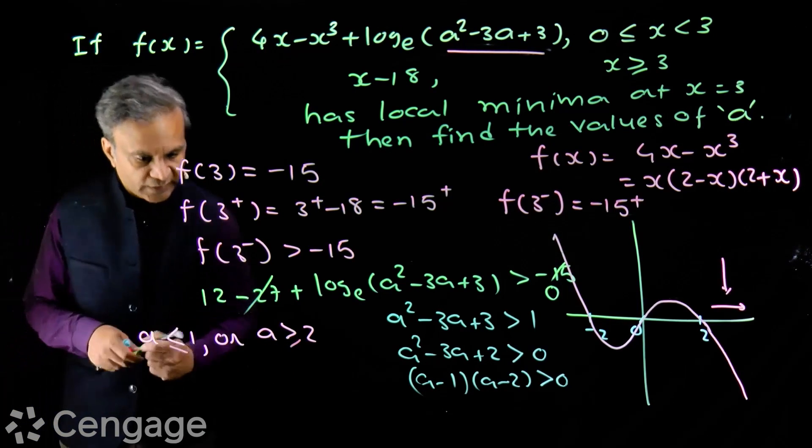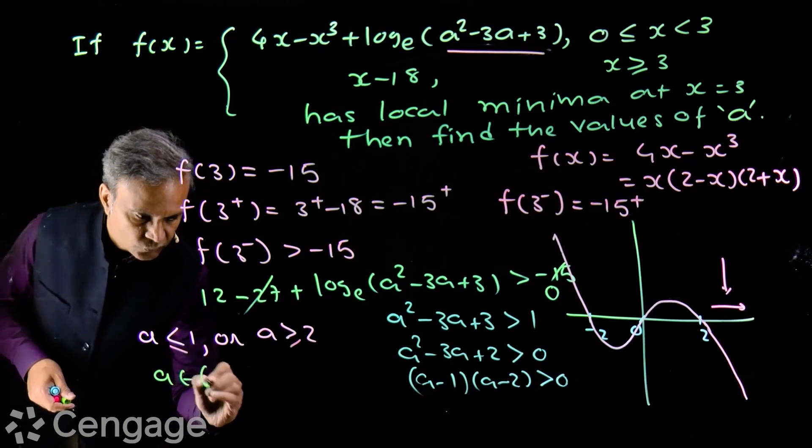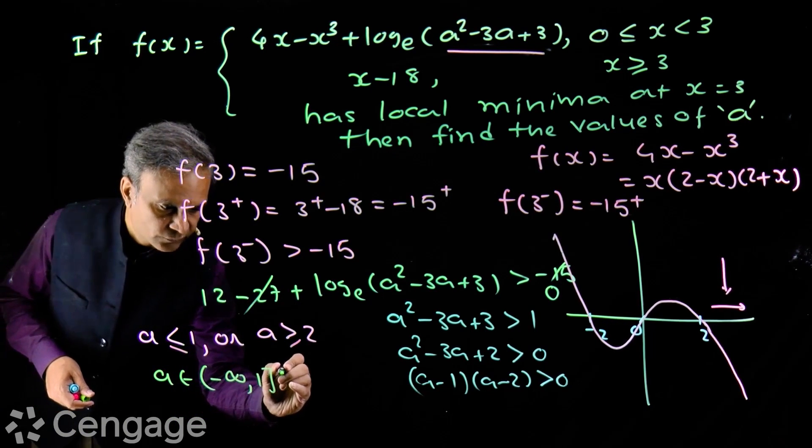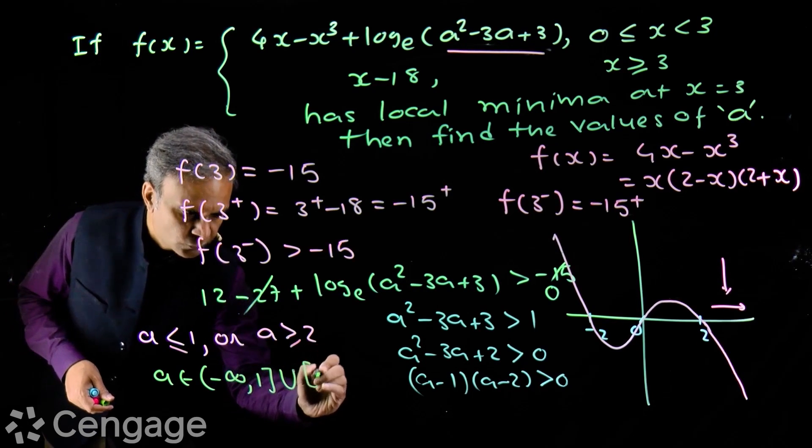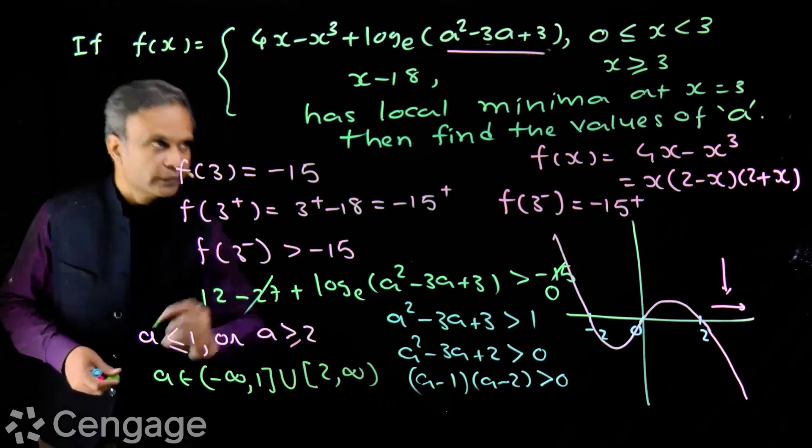So complete set of values of a is a belongs to minus infinity to closed interval 1 union closed interval 2 to infinity.